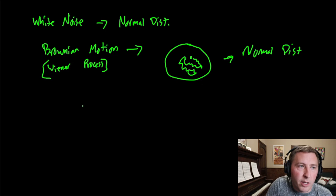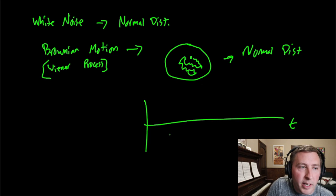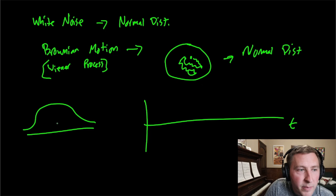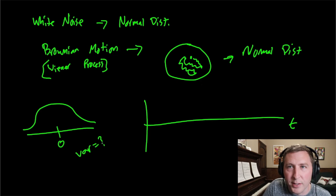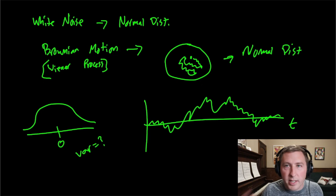A Wiener process or Brownian motion is nothing more than tracking something across time — in this case, tracking the speck of dirt. If you have time and a normal distribution with a mean of zero and some variance (it doesn't have to be standard normal — variance can be anything), it drifts around over time but always comes back to zero. This is what a Wiener process is: a normal distribution being plotted out across time, where we just randomly sample.